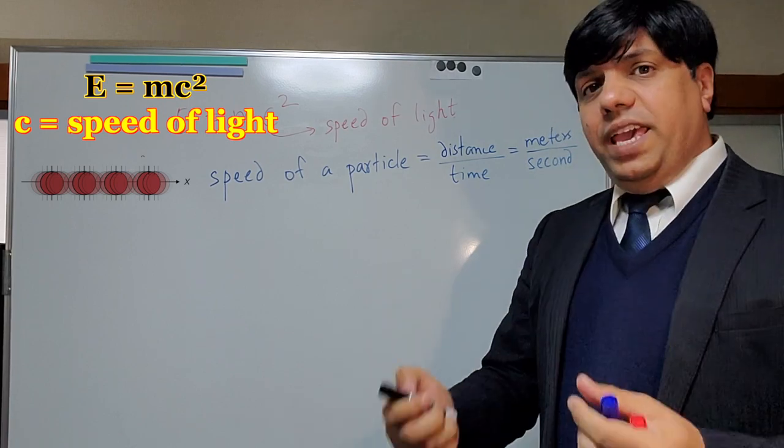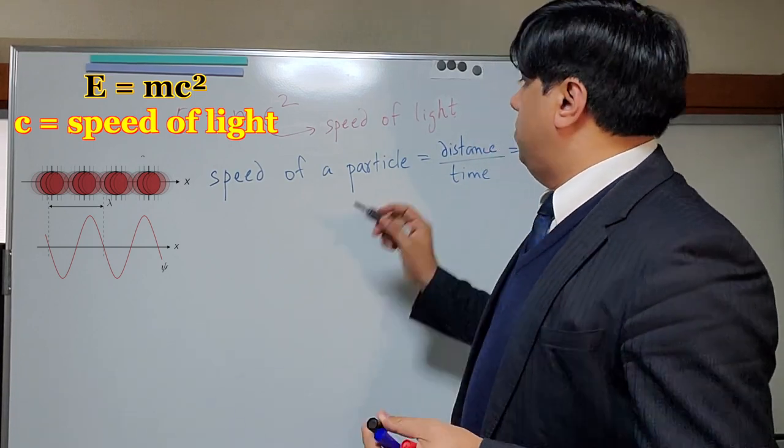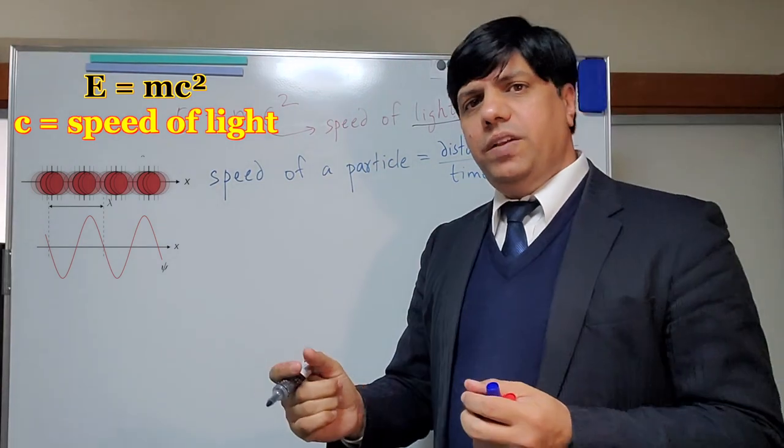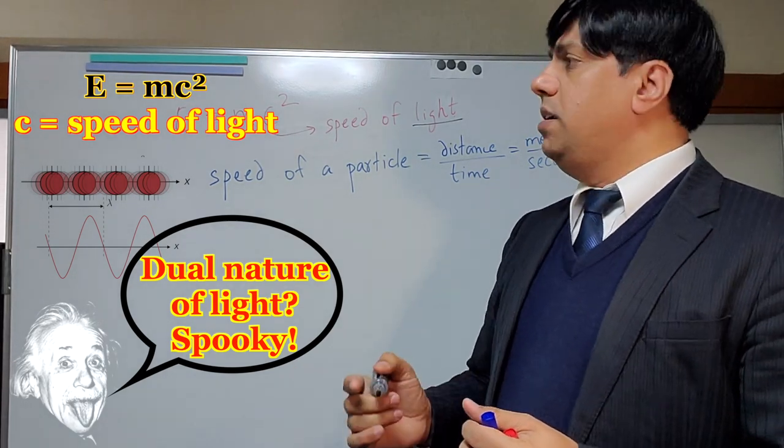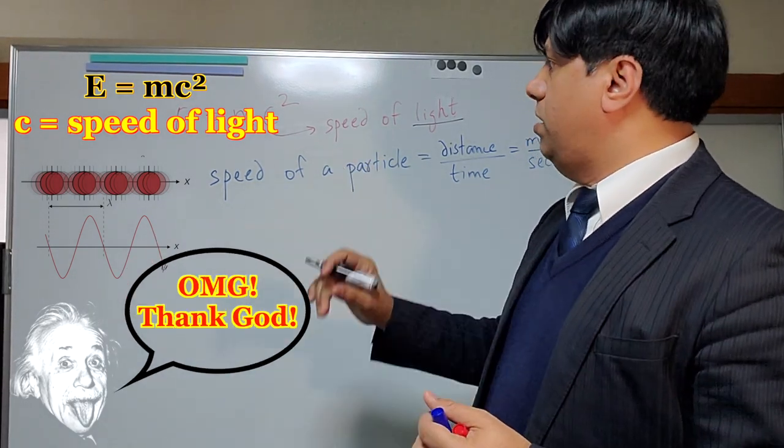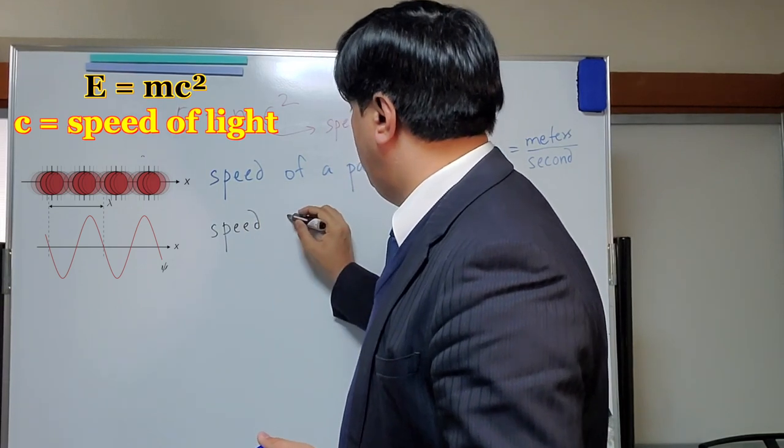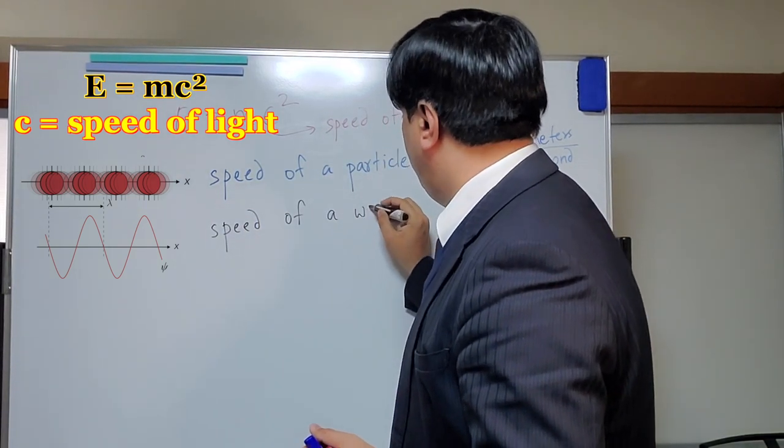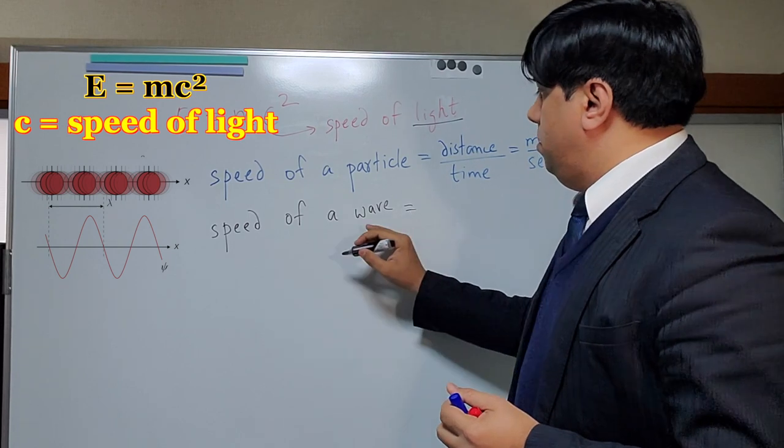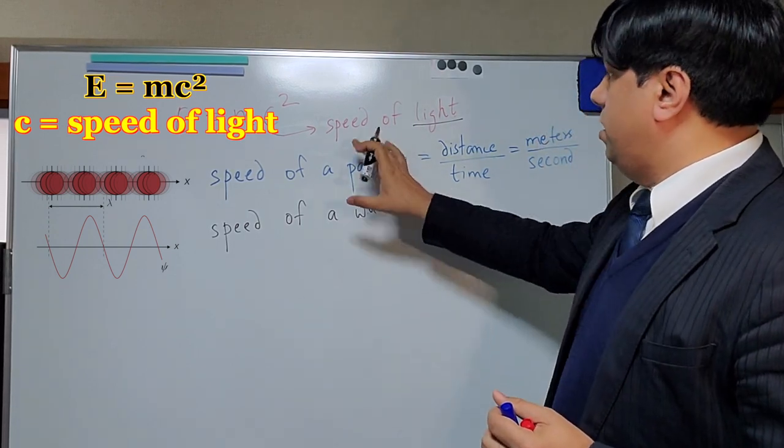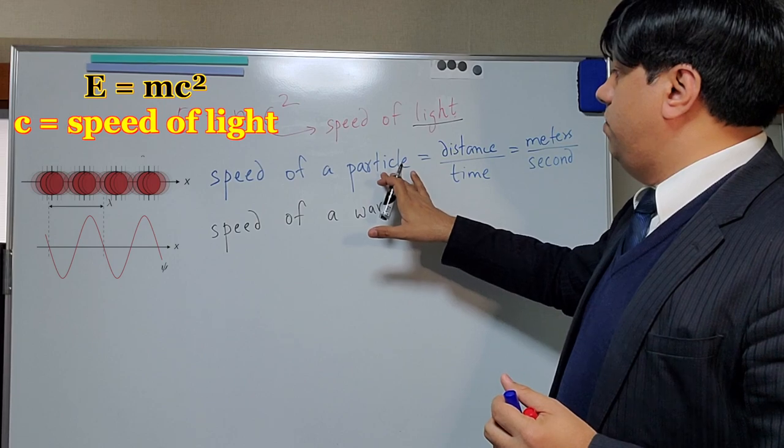But the speed of a wave is a little bit different. It's measured in a different way. Light is both a wave and a particle, and that's what we call the dual nature of light. But today we are not discussing dual nature of light. Today we are interested in measuring the speed of light. And light, as many of us can imagine, is also a wave. How do you measure the speed of a wave?